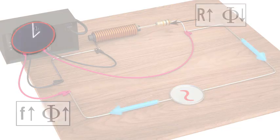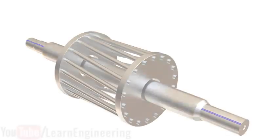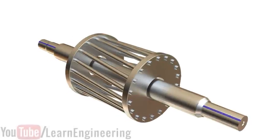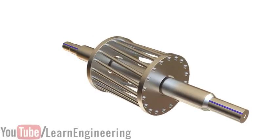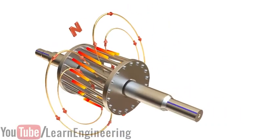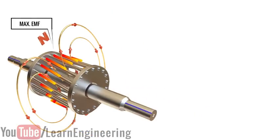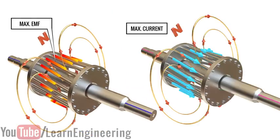The exact same thing is also happening in the rotor. The rotor is a combination of resistance and inductive reactance. Due to the same phase lag phenomenon, if the maximum EMF is on one bar, then the maximum current will be on another bar.